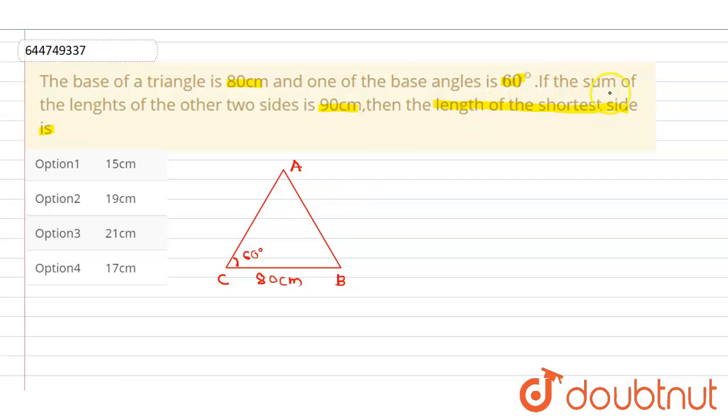Now if the sum of length of the other two sides is 90 cm, then the length of the shortest side is. Let's consider that AB is, let's say this is our x. Then therefore, sorry, AC - if AC is x,